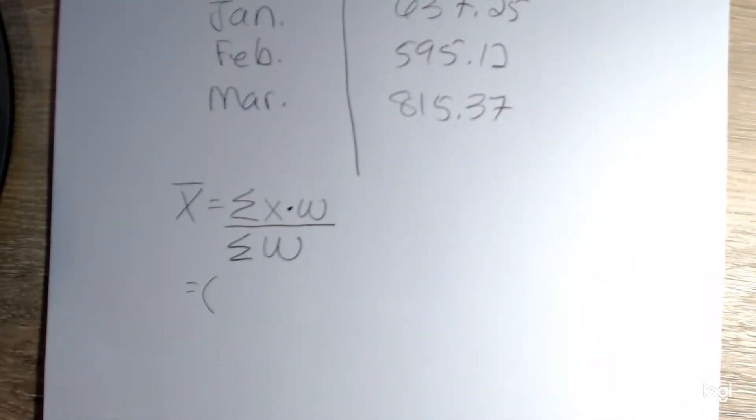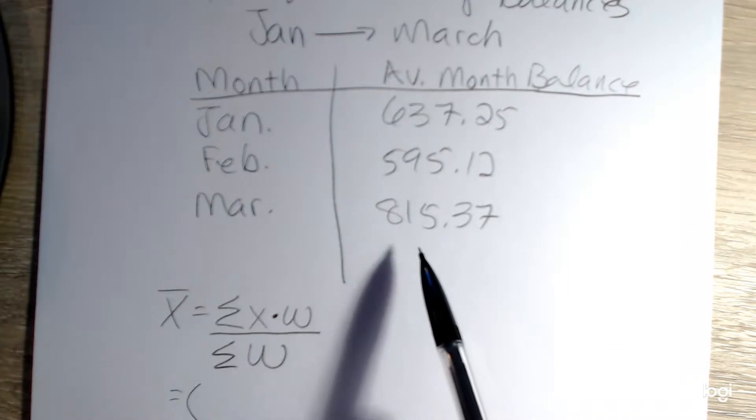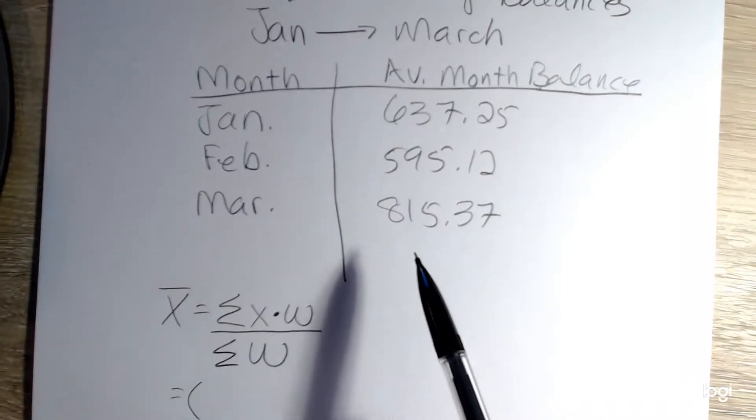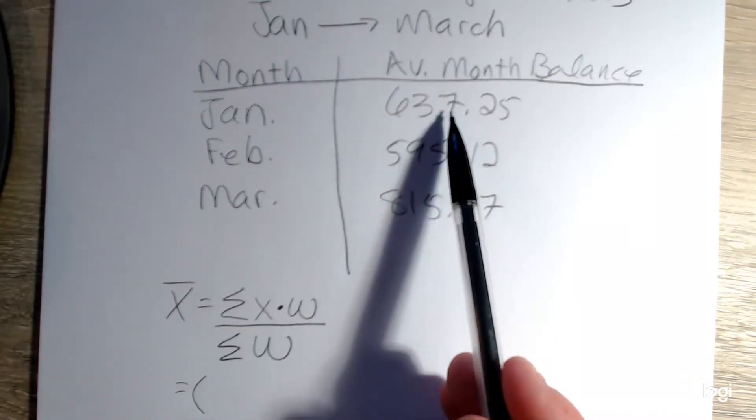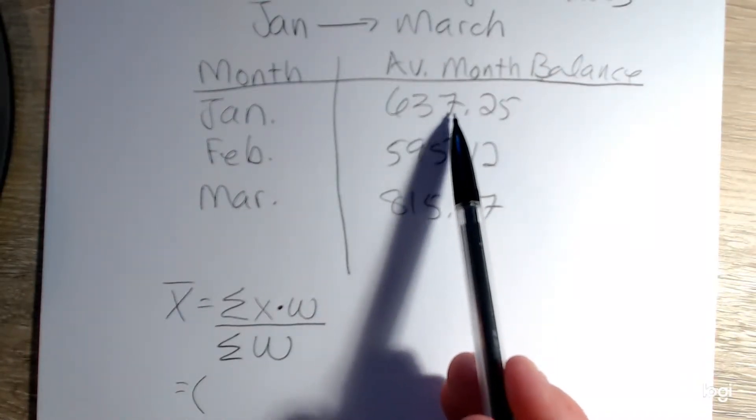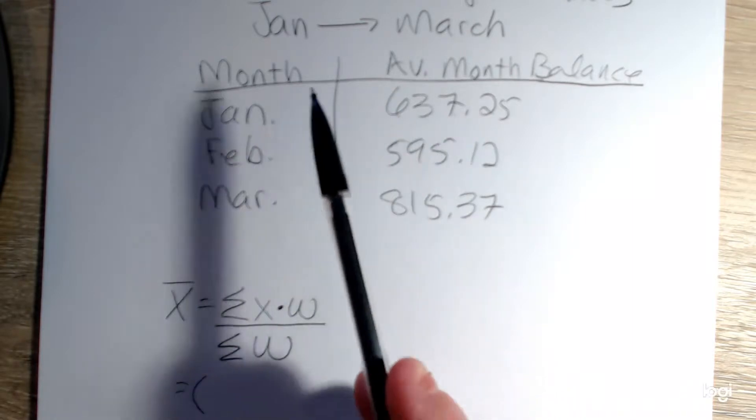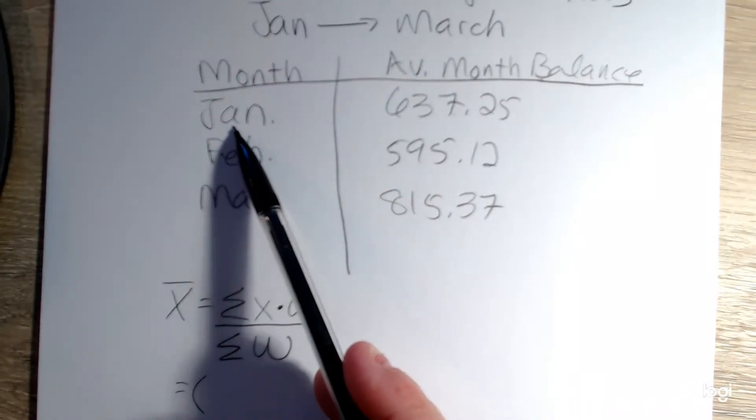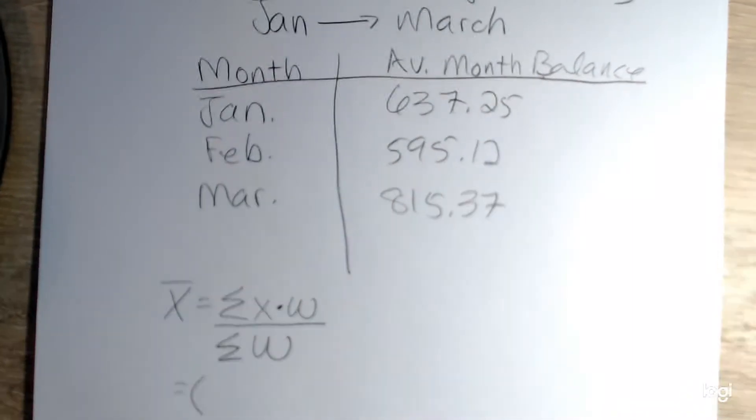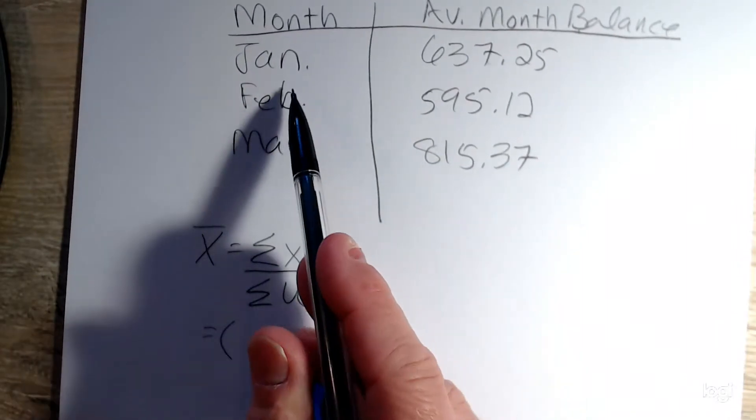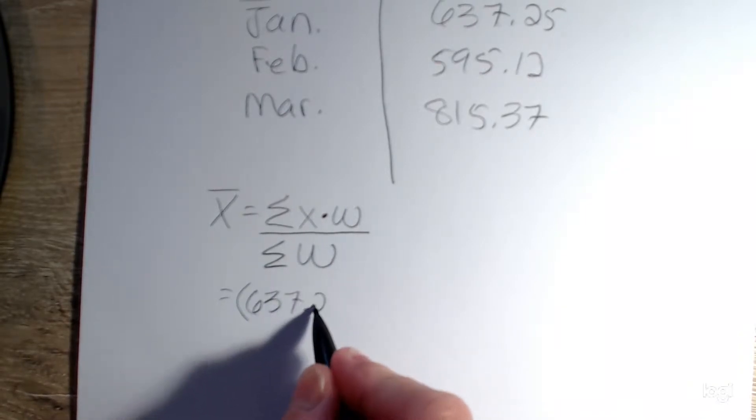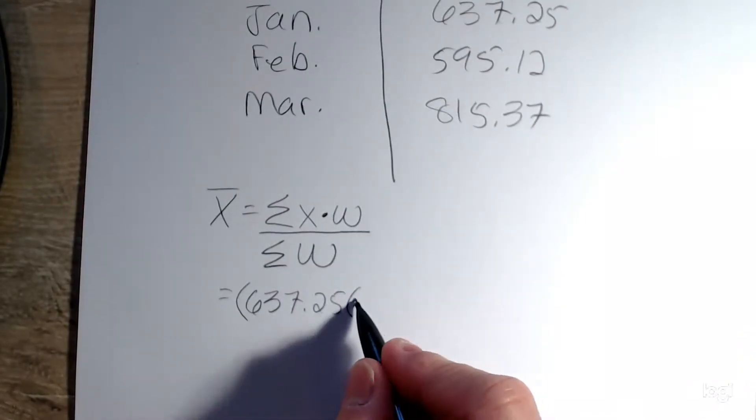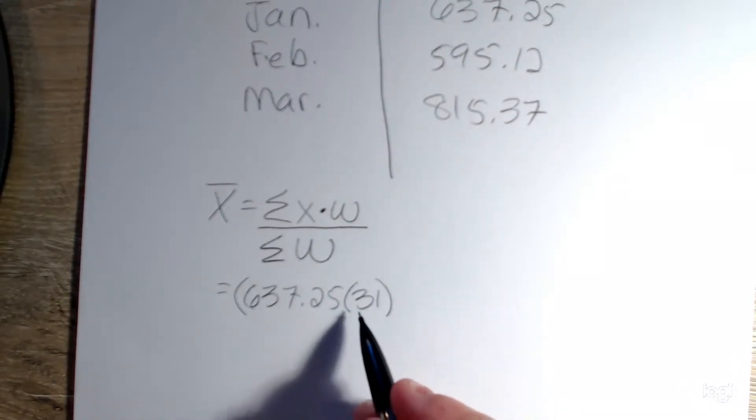To input this information into the calculator, I want to put in each x value, which is my average monthly balance, and multiply it by the number of days per month, which is the weight. So inputting into this formula, I'll have 637.25 times 31, because January has 31 days,